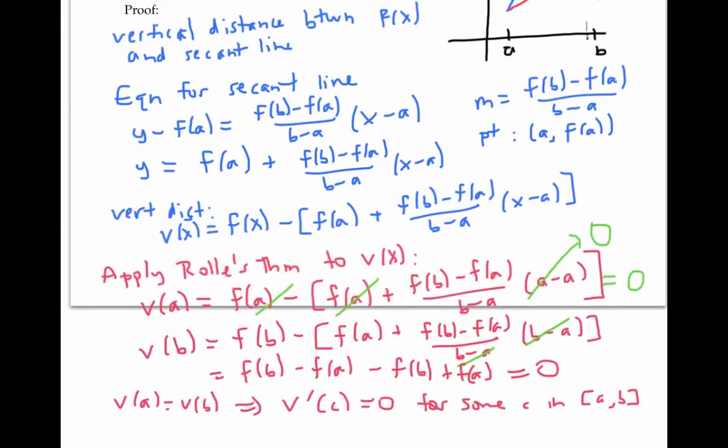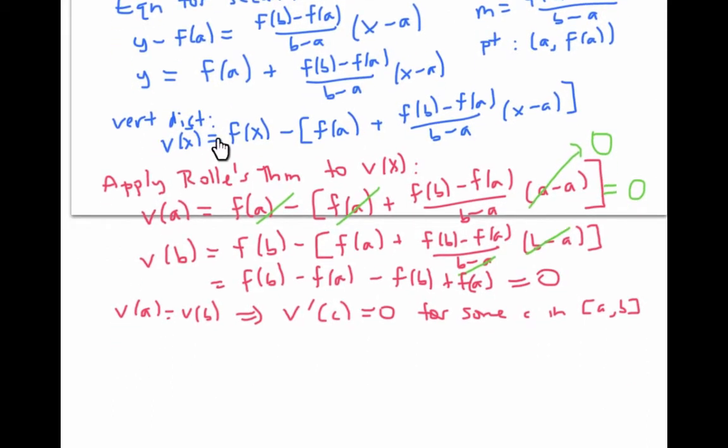Let's see what this means in terms of the original equation for v(x). v'(x) is going to equal f'(x) minus... the derivative of f(a) is just zero. This is just a constant multiple. So I'm going to get [f(b) - f(a)] / [b - a] times the derivative of (x - a), which is just one.